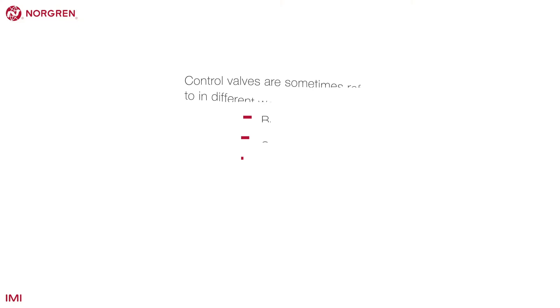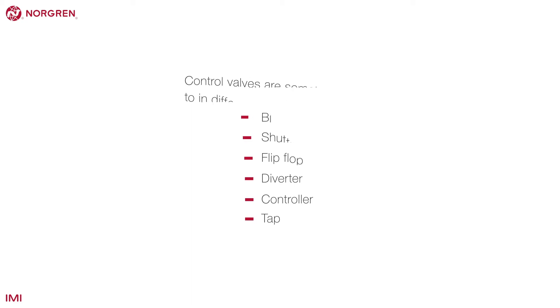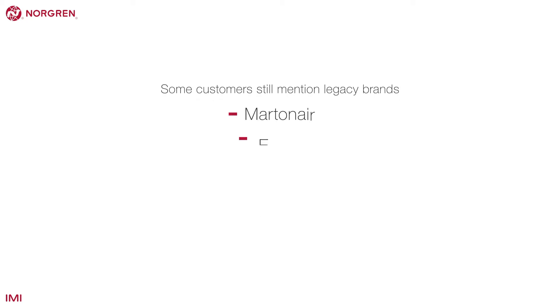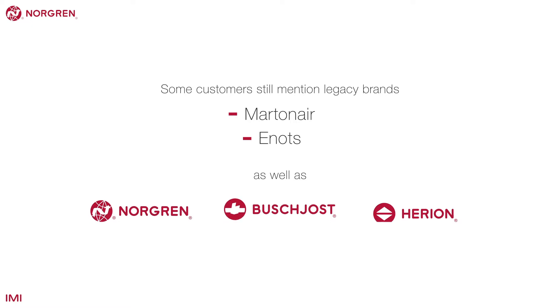Control valves are sometimes referred to in different ways by customers. It is also worth remembering that some customers still mention legacy brands like Martinair and Enots, as well as Norgren, Buschost and Herion, when referring to our control valves.